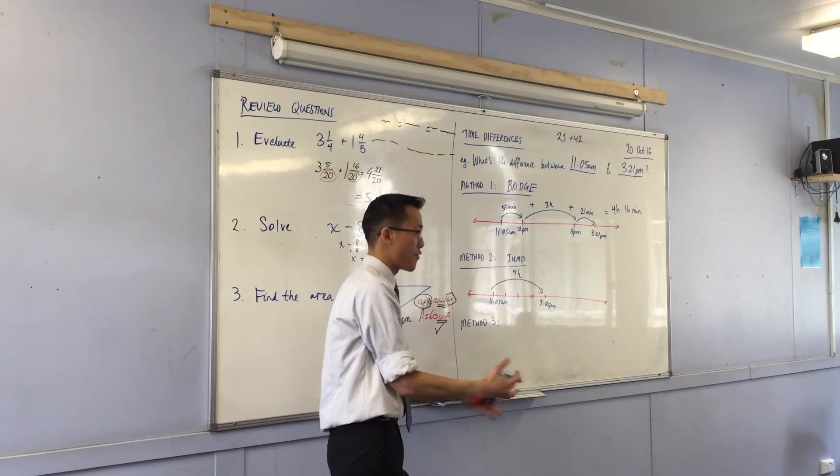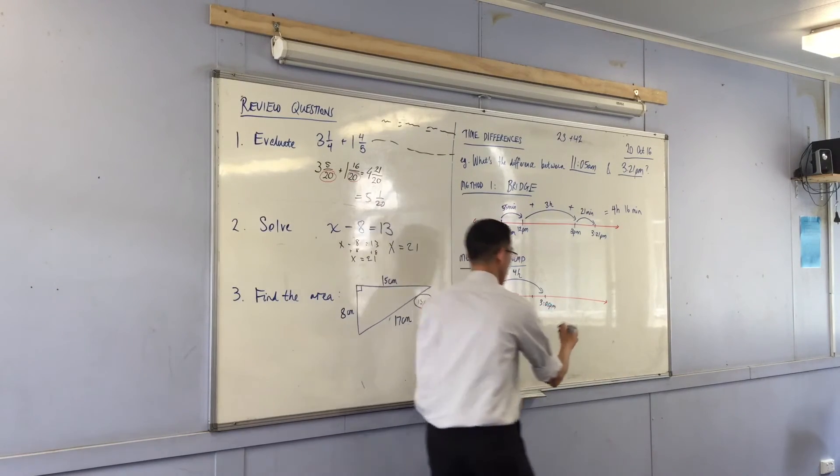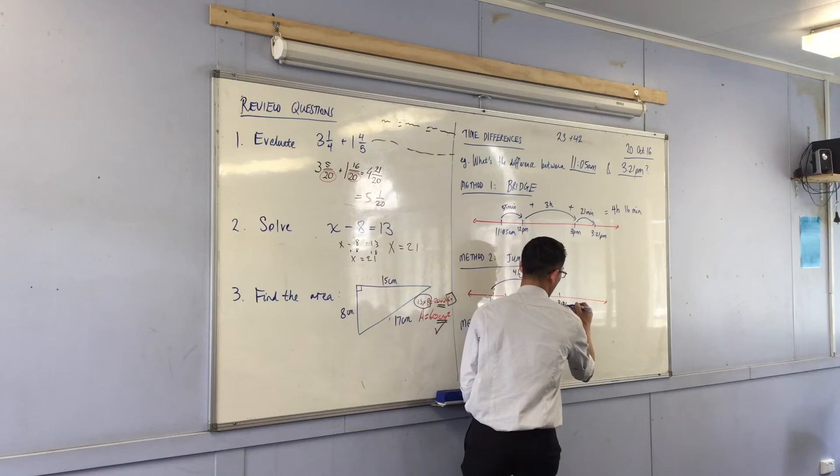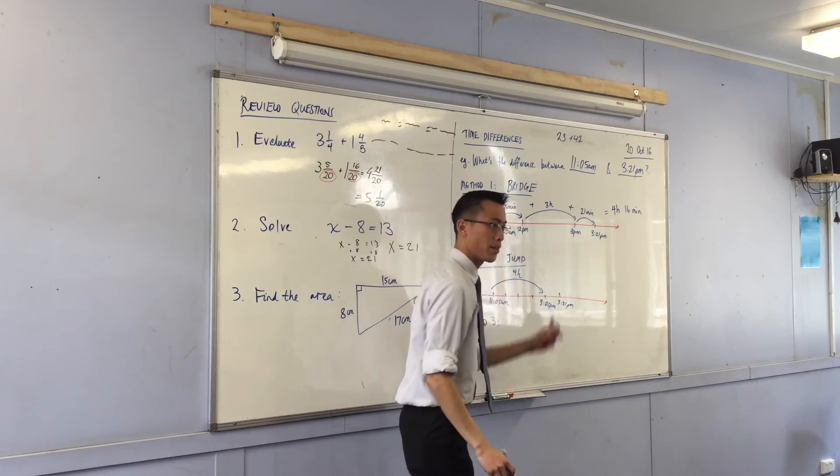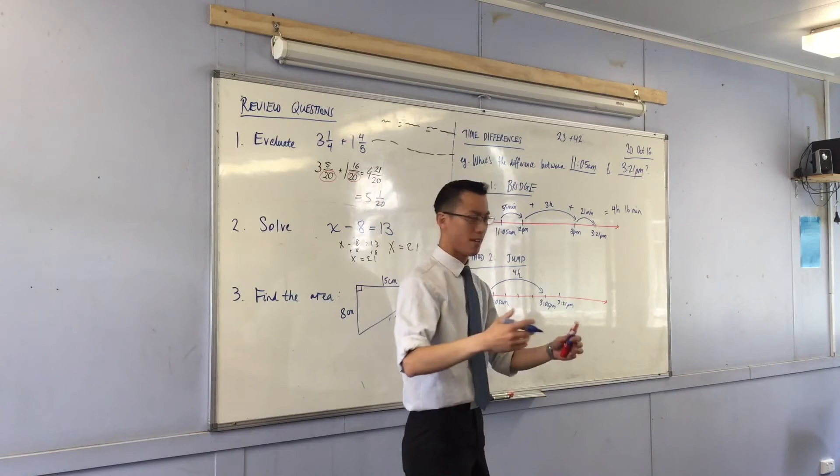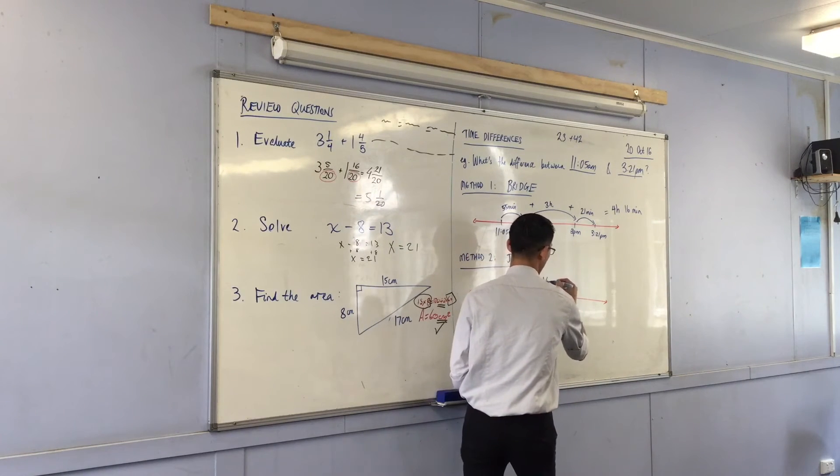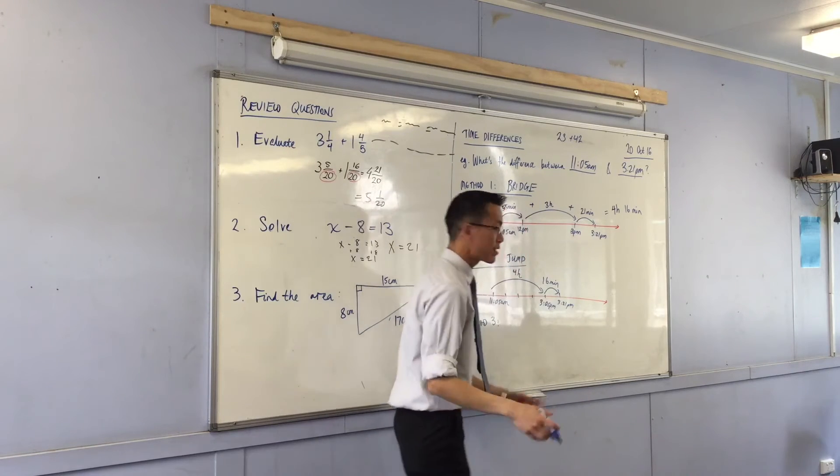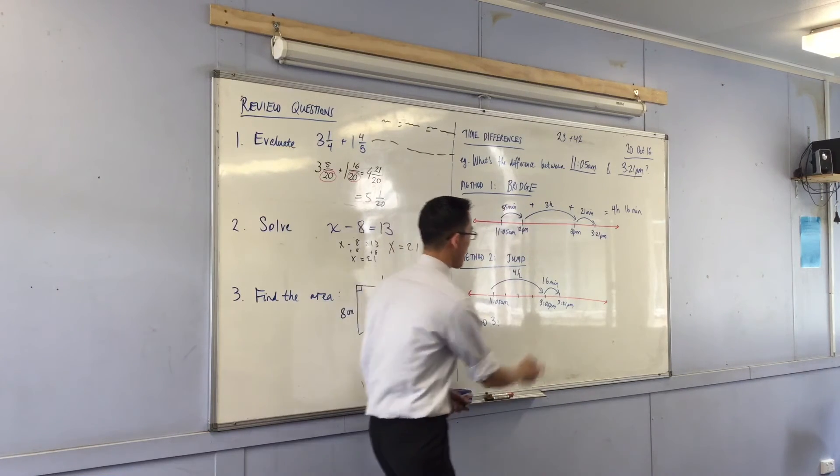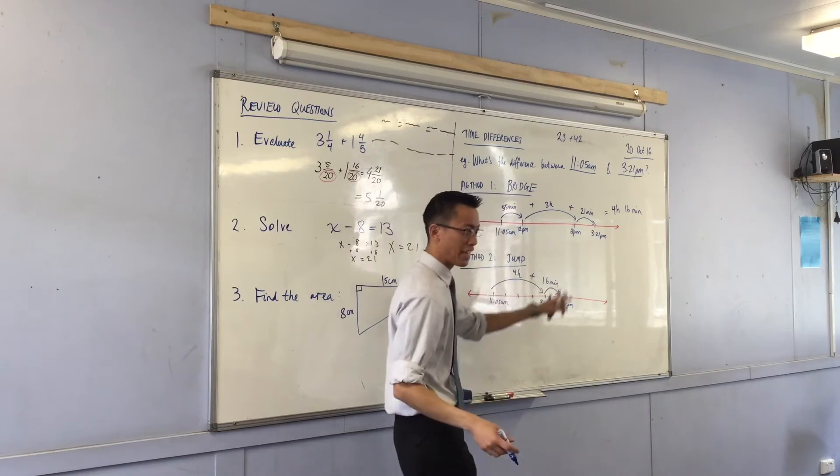And the last step is, well, I'm at 3:05, I've got to get to 3:21, which is not that far away. How many minutes are there between 3:05 and 3:21? Surprisingly, there are 16. So you can see, same deal, right?